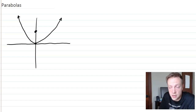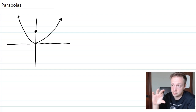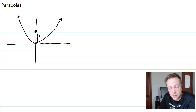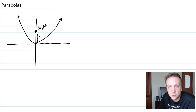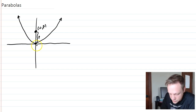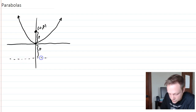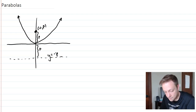The focus is directly above the vertex. We call the distance from the focus to the vertex 'p' — it's a standard variable. If the vertex is at (0, 0), then the focus is at (0, p). The directrix is exactly the same distance on the other side of the vertex, so it's at a negative p distance — the directrix is the line y = -p.